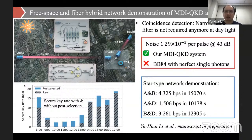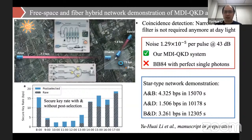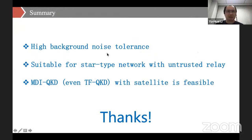Under the same condition, BB84 protocols were not working even with perfect single-photon sources. We performed the experiment from 8 a.m. to 5 p.m. — the security key rate in each hour is shown in the bar figure. Since atmospheric turbulence significantly affects the visibility of Hong-Ou-Mandel interference, we apply a post-selection method that only chooses detection events corresponding to similar channel efficiencies, further increasing the security key rate. We also performed a network demonstration showing that MDI-QKD is suitable for star-type network with an untrusted relay, and that MDI-QKD or even TF-QKD with satellite is viable. Thank you.